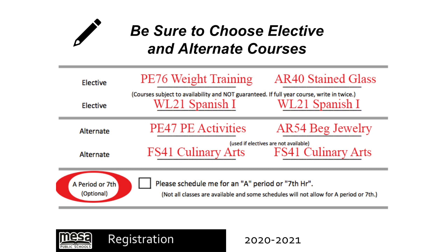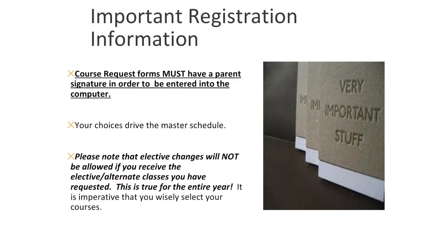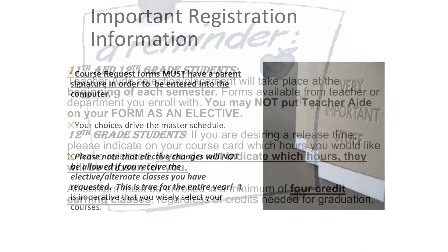Be sure to choose elective classes and two alternate courses in the event your first choice becomes unavailable. Regarding registration, course request forms must have a parent signature in order to be entered into the computer. Your choices drive the master schedule. Please note that elective changes will not be allowed if you receive the elective or alternate classes you have requested. This is true for the entire year. It is imperative that you wisely select your courses.